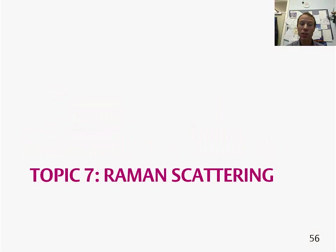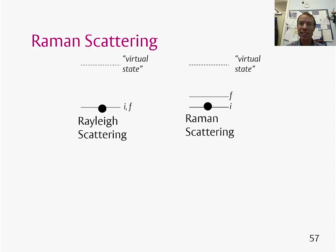Welcome to topic 7, in which we're going to look at Raman scattering. As I mentioned right at the beginning of this course, when light interacts with matter, different things can happen. The light can be absorbed, and that's what we've thought about up until now, or the light can potentially be scattered.